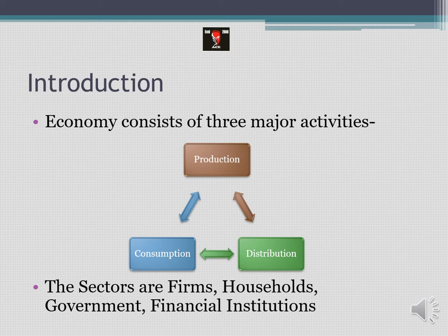So how these activities work, or how are they related, we are going to discuss in the further subpart. The major sectors which are involved in the economy are: firms - the ones who make the goods and services; households - the ones who consume goods and services; government - the institution which takes care of the needs and requirements of the public or the citizens; and financial institutions, which help in facilitation of money in the economy.